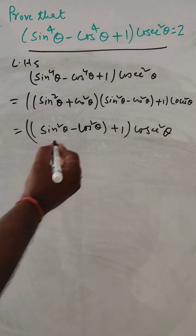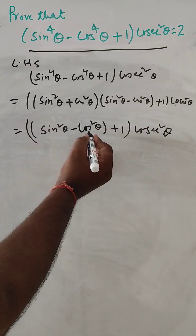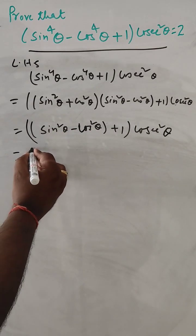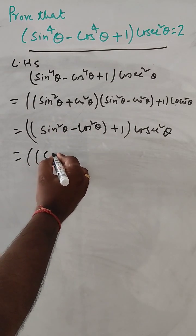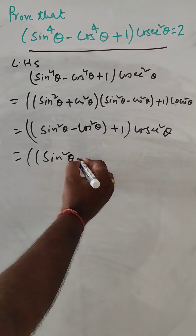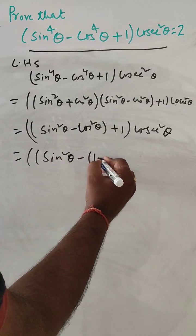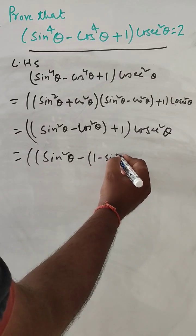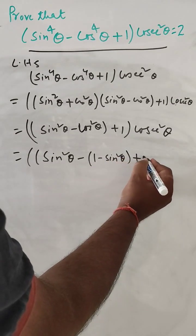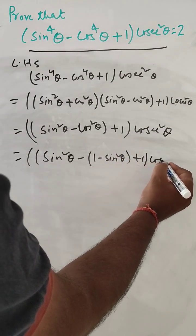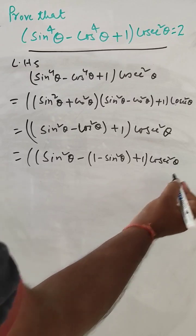Now we can change this cos square into sin square. So we can do like this: sin square theta minus 1 minus sin square theta plus 1 here cos square theta.